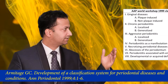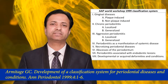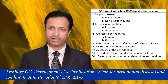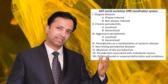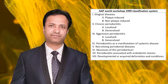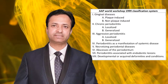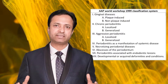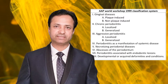The AAP 1999 classification system consists of eight categories: first, gingival diseases — plaque-induced and non-plaque-induced; second, chronic periodontitis — localized and generalized; third, aggressive periodontitis — localized and generalized; fourth, periodontitis associated with systemic diseases; fifth, necrotizing periodontal diseases; sixth, abscesses associated with the periodontium; seventh, periodontitis associated with endodontic lesions; and eighth, developmental and acquired deformities and conditions.